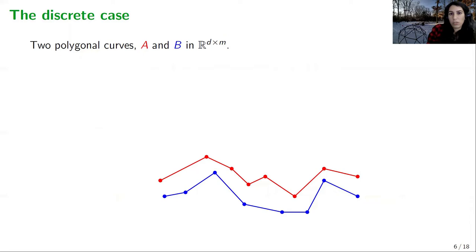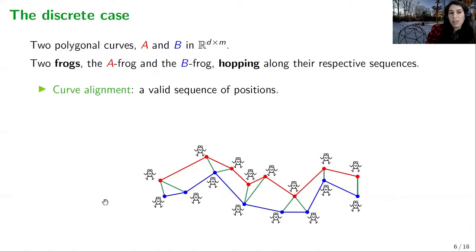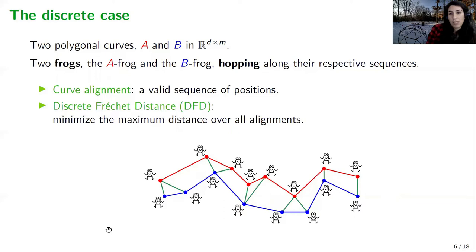In this talk we focus on the discrete version of Fréchet distance, where we only care about distances between the vertices of the curves. Here we replace the man and dog by two frogs, and the frogs jump from point to point on their respective sequences. This sequence of jumps defines a curve alignment — a valid sequence of positions of the two frogs along their curves. The discrete Fréchet distance minimizes the maximum distance between the frogs over all possible alignments.